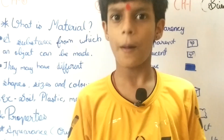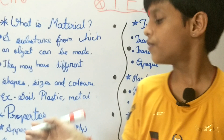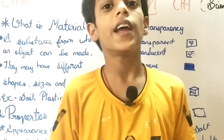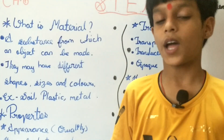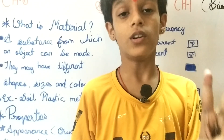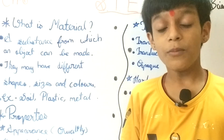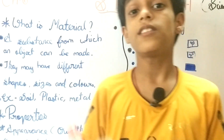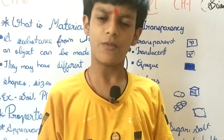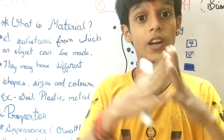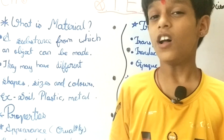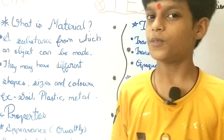Now there are properties. First is appearance — in another word, we can say its quality. It is of two types: lustrous and non-lustrous. The object that has a shine is called a lustrous object, and the object that does not have any shine is called a non-lustrous object.